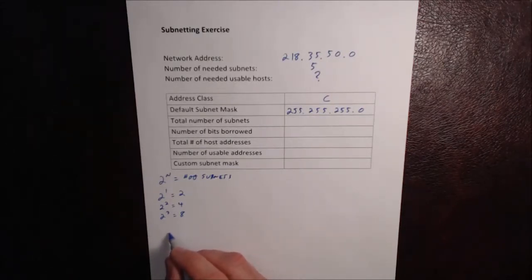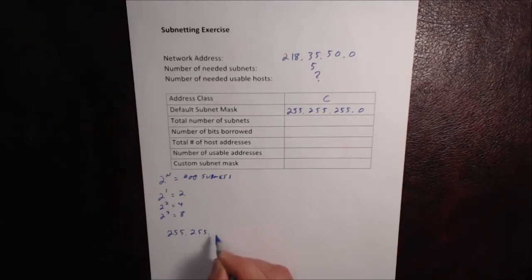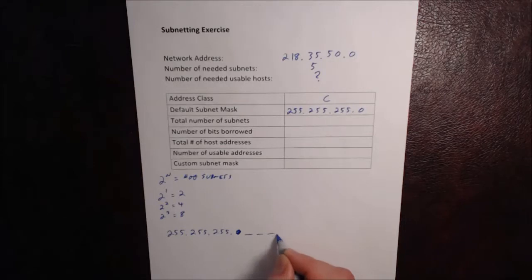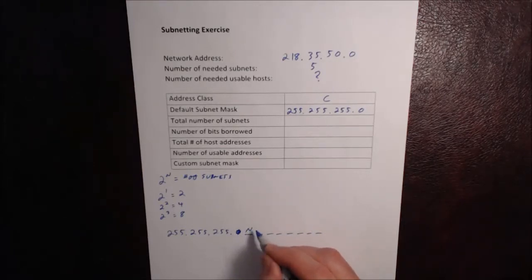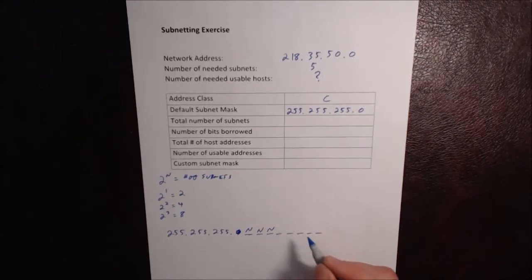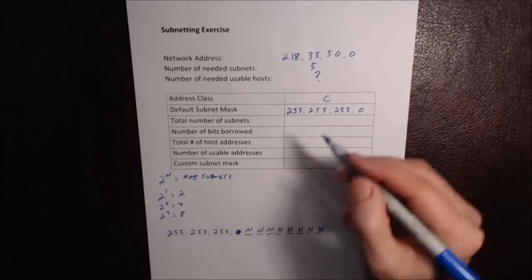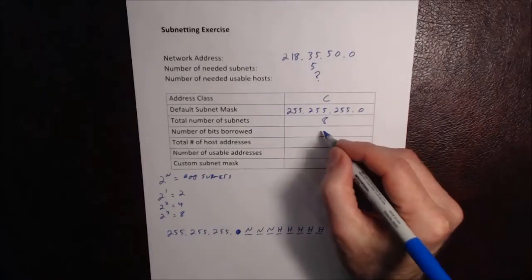If we write out our subnet mask with the bit places — 128, 64, 32, 16, 8, 4, 2, 1 — these first three bits are going to be network bits, and that means the remaining five bits are all going to be host bits. So we're going to get eight subnets from borrowing three bits.